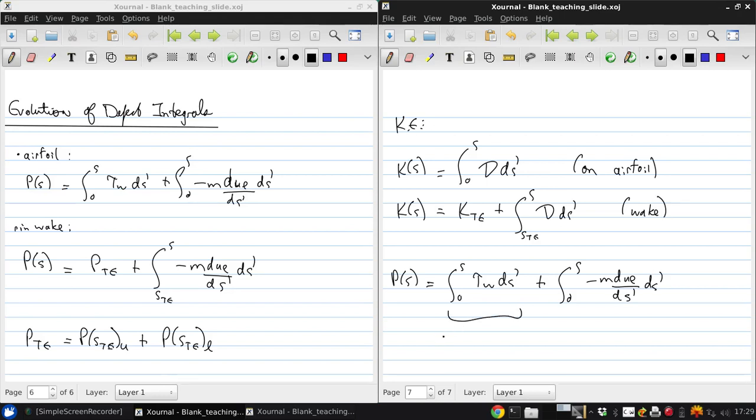This being the contribution from friction up to location s, and this being the contribution from pressure up to s. So basically, doing this integral all the way to the trailing edge for both sides of the airfoil will yield the skin friction drag, and doing this all the way to the end of the airfoil will yield the pressure drag.